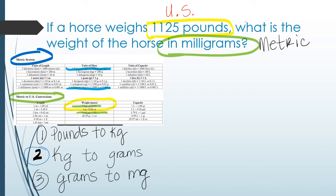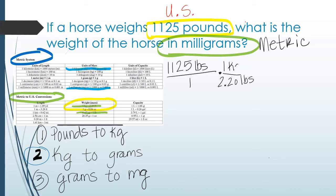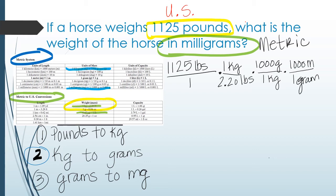On the next slide, I'll show how to condense it to two steps, but let's start setting up our conversion factors. I want to start with 1,125 pounds over one — that's my first fraction. Now I need to get from pounds to kilograms, so I'm going to use 2.20 pounds to one kilogram, with pounds in the denominator so the common unit of pounds divides out. Then I know that one kilogram equals 1,000 grams, and one gram equals 1,000 milligrams.